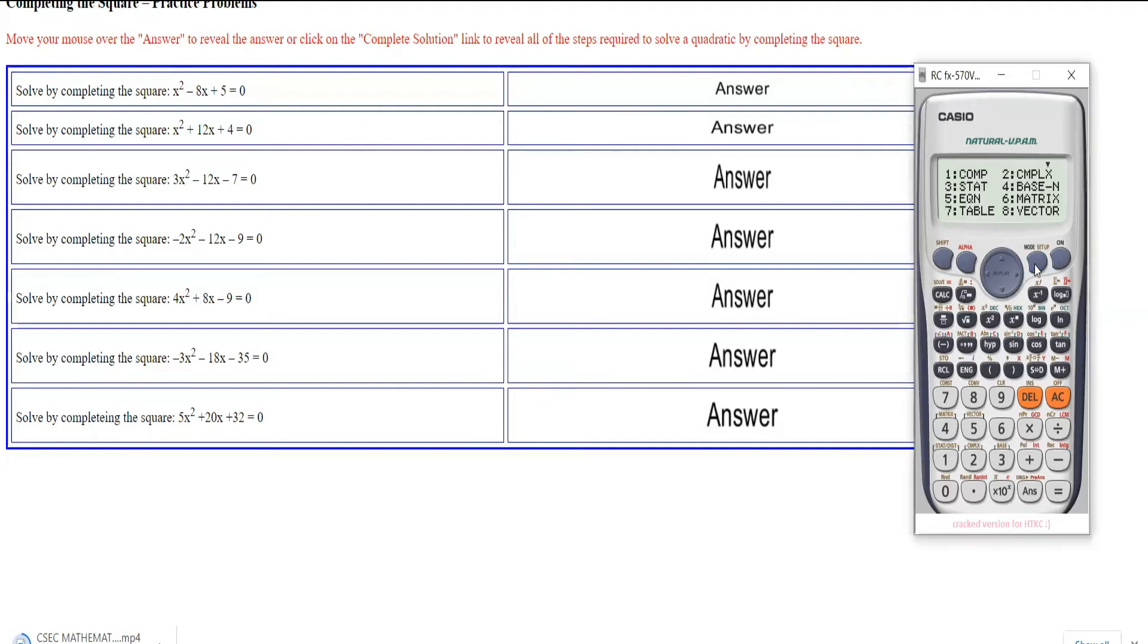First thing I want you to do is go to your calculator, your first mode, then you go down to number five. In your first equation, it is a polynomial of degree two, so you press number three since it's a quadratic.